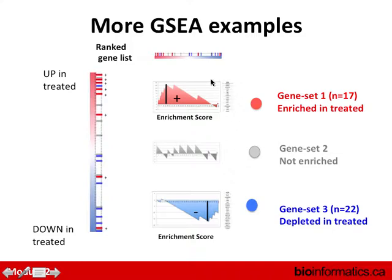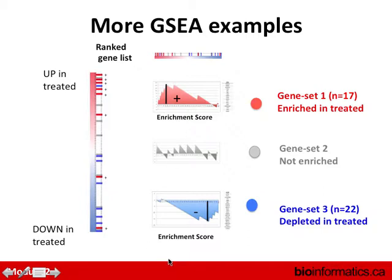Here's an example of GSEA plots — what they look like. This is a plot of a highly enriched gene set where you can see the score goes way up. Here's one that is not really enriched — it kind of goes up and down. And here's one that's depleted. You can see how the red and blue patterns here correspond to enriched, neutral, and depleted gene sets.